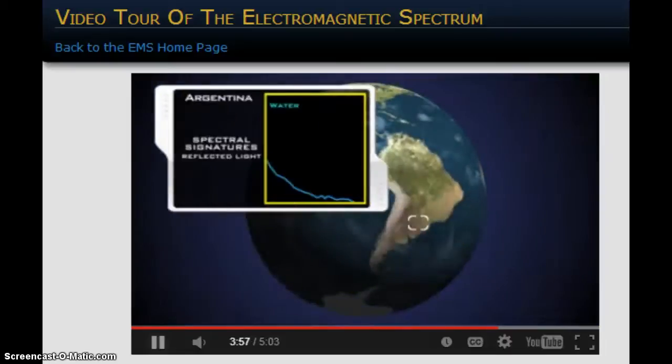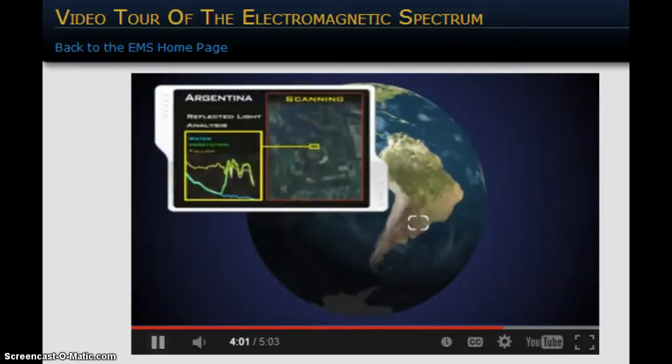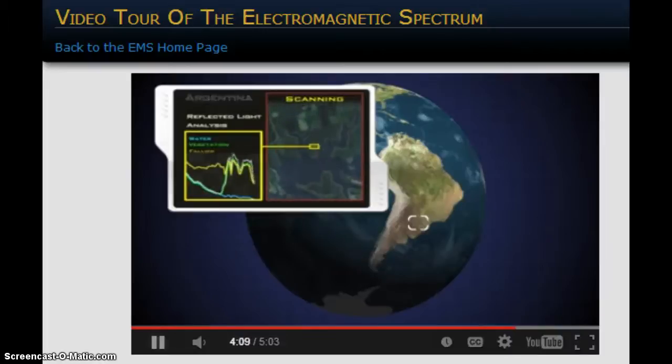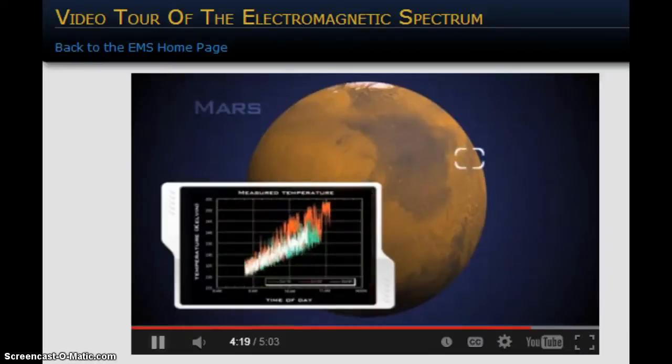Everything around us emits, reflects, and absorbs EM radiation differently based on its composition. A graph showing these interactions across a region of the EM spectrum is called a spectral signature. Characteristic patterns, like fingerprints within the spectra, allow astronomers to identify an object's chemical composition, and to determine such physical properties as temperature and density.